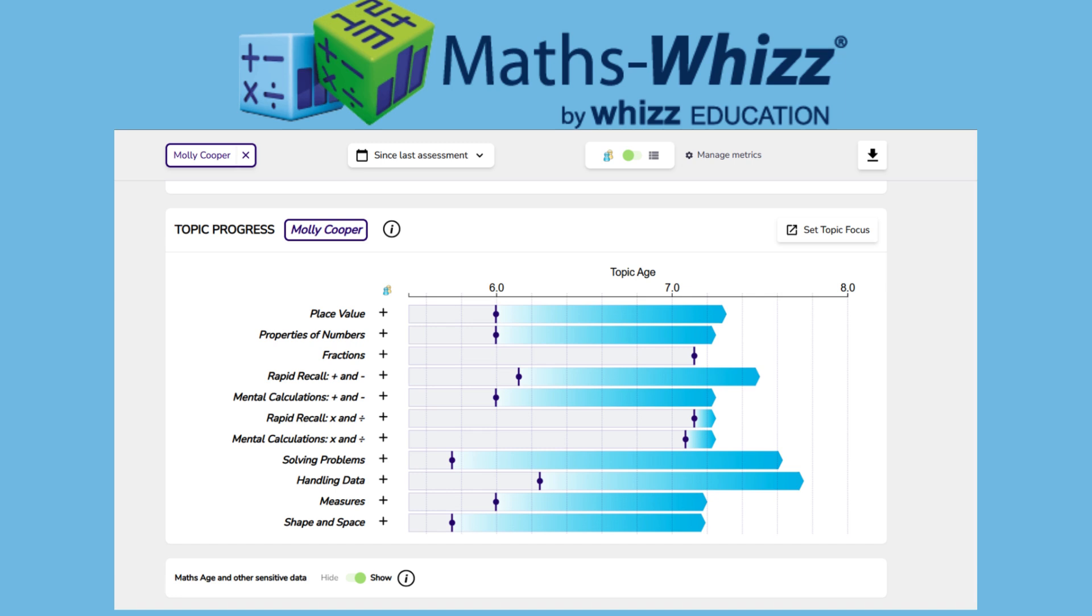Take a look at Molly's profile. The dark blue lines are where she was when she was assessed, showing a staggered learning profile, which is quite typical. The light blue bars show the progress Molly has made since using MathsWiz.